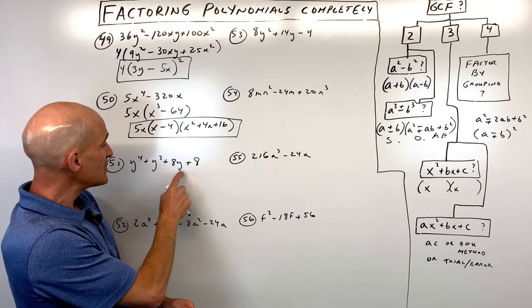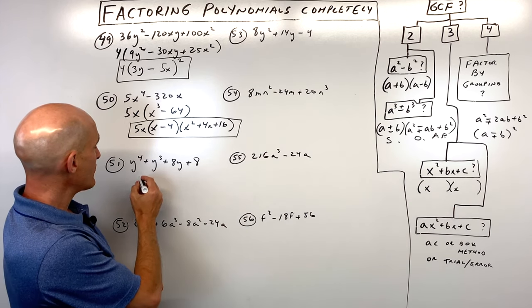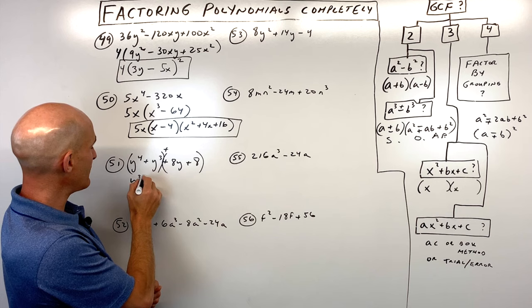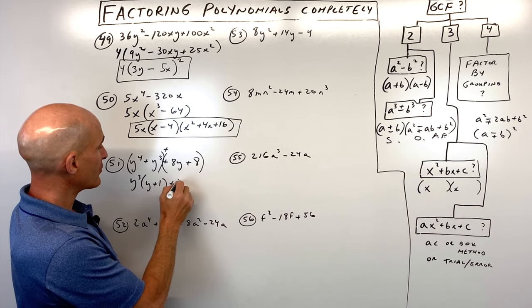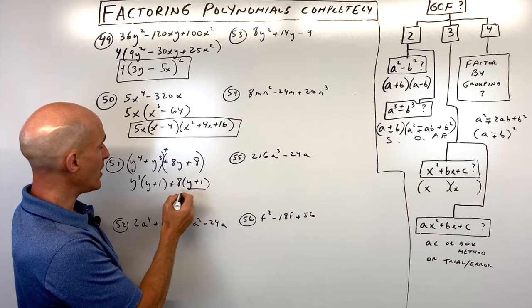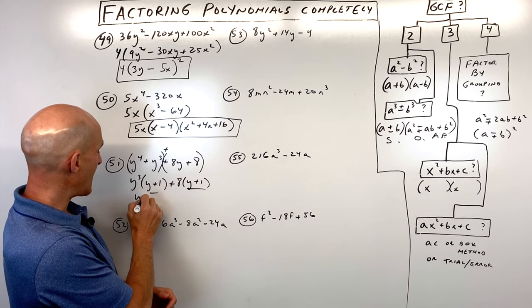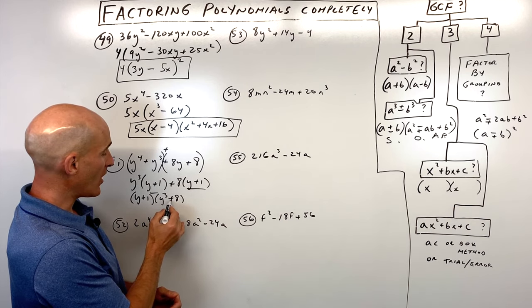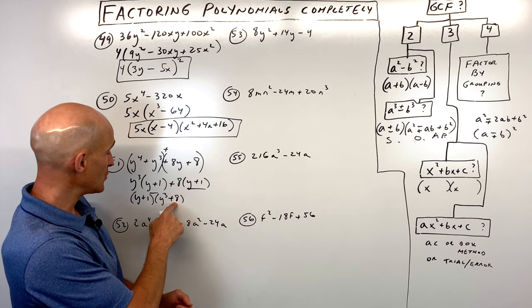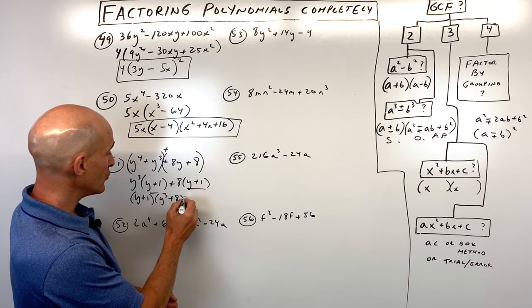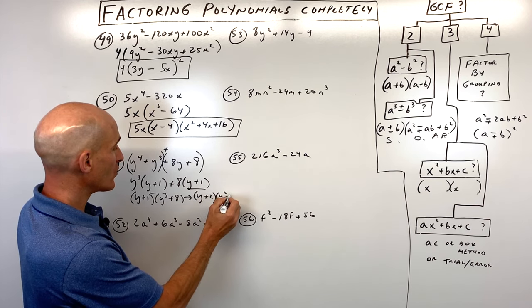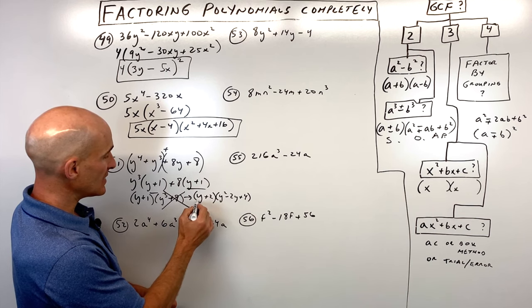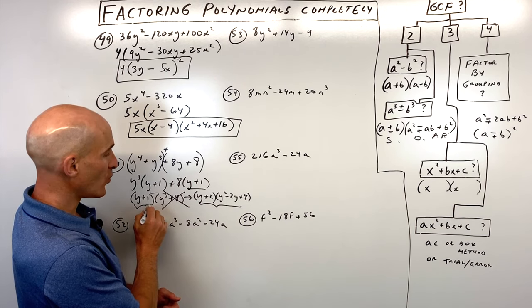Number fifty-one has four terms. Factoring by grouping: factor out y cubed from the first pair, giving y plus 1. Factor out 8 from the second pair, also giving y plus 1. Factor out y plus 1 to get y plus 1 times y cubed plus 8. Now y cubed plus 8 is actually a sum of two cubes since 8 is 2 cubed. So we factor further: y plus 2 times y squared minus 2y plus 4. Bring down the y plus 1 for the fully factored form.